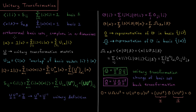Then we have basis set number two, which I represent as alpha and beta. They form another orthonormal basis set and have another resolution of the identity operator, which is an identity that transforms you into basis set two.